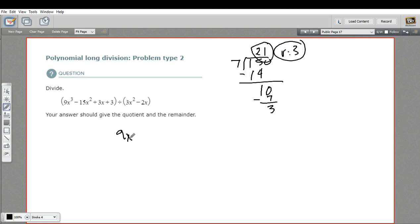So let's just write this out: 9x³ - 15x² + 3x + 3. And then we'll make the same kind of bracket we do for normal division. And we'll put this guy out here, 3x² - 2x, the thing we're dividing by.